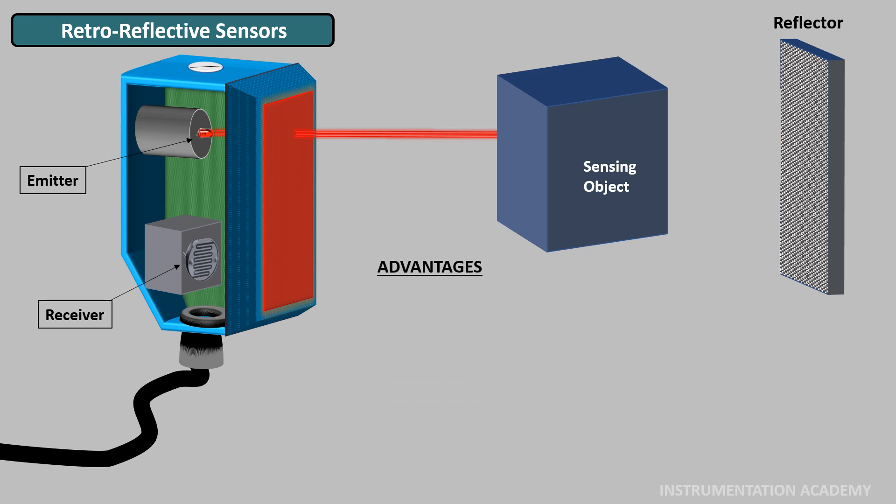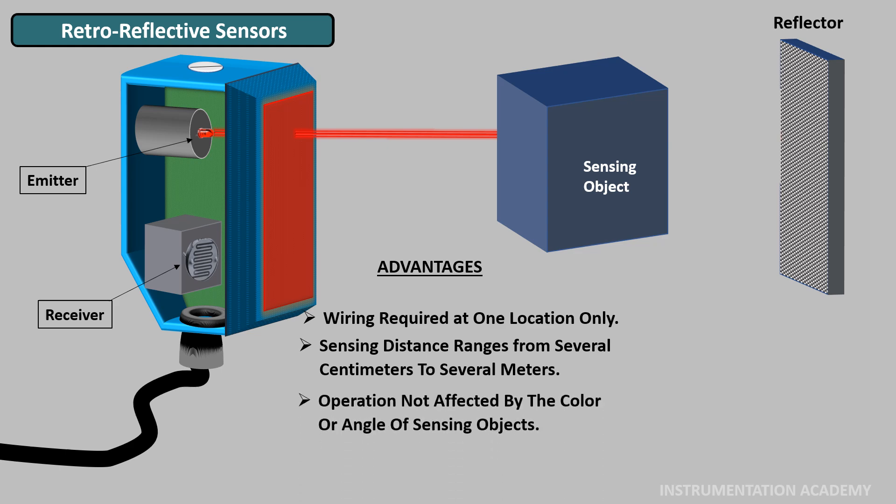Advantages of retro reflective sensors: As the emitter and receiver are on the same housing, one wiring location is only required. Sensing distance ranges from several centimeters to several meters. Operation not greatly affected by the color or angle of sensing objects. These are good for transparent large and reflective objects as well as objects moving quickly.